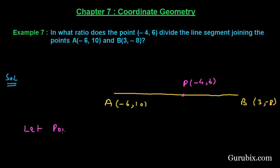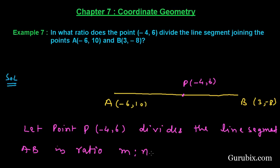therefore, let point P(-4, 6) divide the line segment AB in the ratio M:N. So here we shall plot M, here we shall plot N.